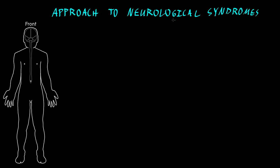When trying to diagnose which disorder is causing a neurological syndrome, the first step is to locate the lesion — ask yourself, where is the lesion most likely? The reason to start with this step is because different types of pathology tend to cause focal or diffuse dysfunction of different parts of the nervous system.